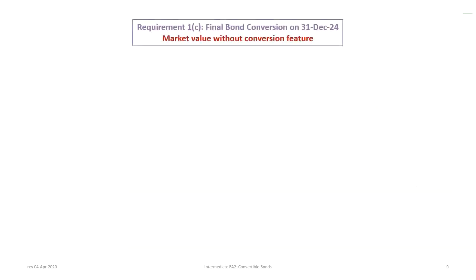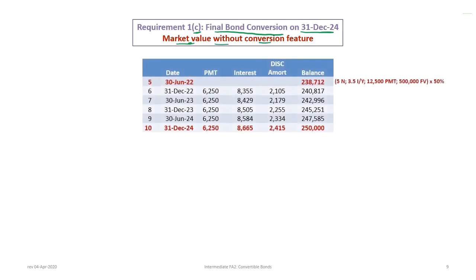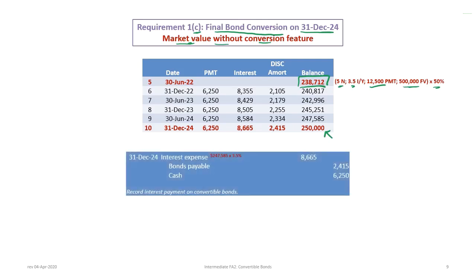Requirement 1c is to record the final bond conversion on December 31st, 2024. We reproduce the remaining revised bond amortization table for the remaining 50% of the bonds without the conversion feature. Using 5N, 3.5 IY, $12,500 payment, $500,000 future value, and taking 50%, gives a value of $238,712 for the unconverted bonds, carrying forward from before. There are five periods left, and this shows the annual interest expense going forward, reaching $250,000 at the end.